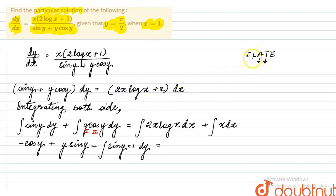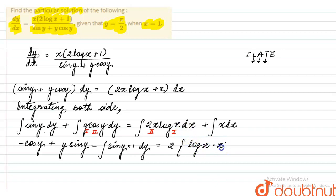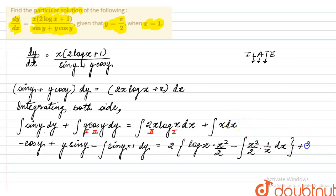For the right side, in ILATE, logarithmic comes before algebraic. So first function will be log x and second function will be x. Applying integration by parts: 2 times [log x · (x²/2) minus the whole integration of x²/2 times (1/x) dx]. The integration of x dx gives x²/2.